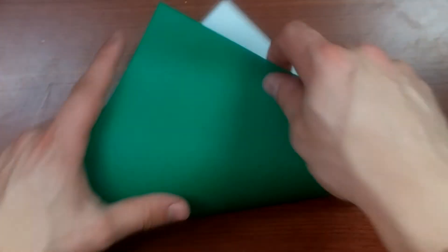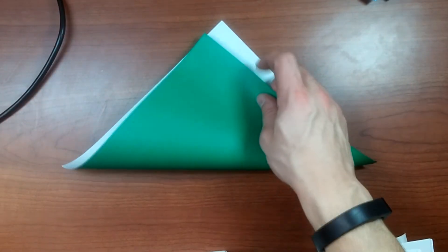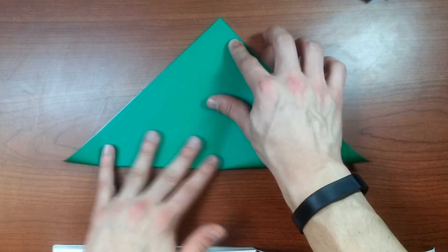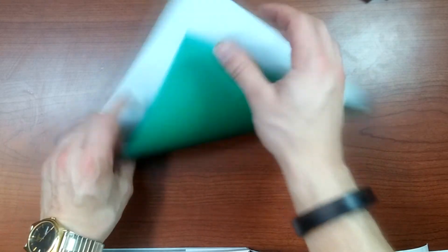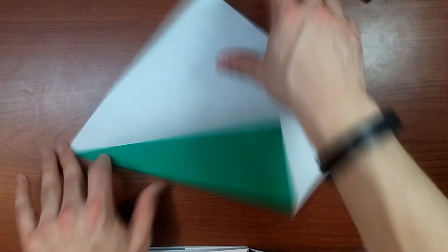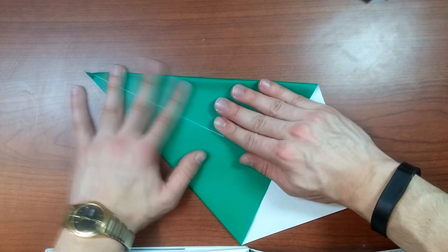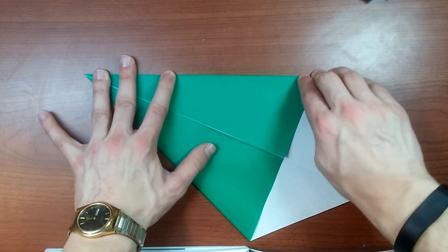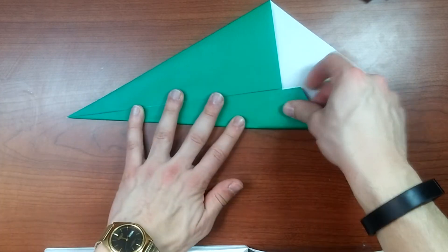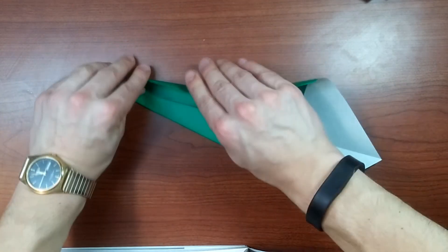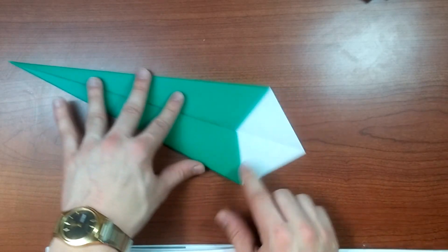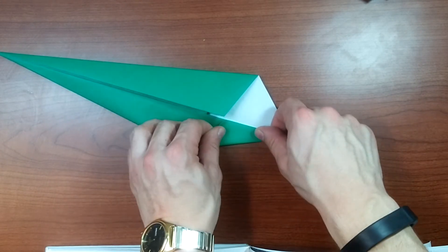First step. White side up. Fold in half diagonally. Let me zoom out a little bit. Sorry about that wire. There we go. All right. Unfold. Fold two edges in like this. Fold two edges in again. Sensing a pattern here.